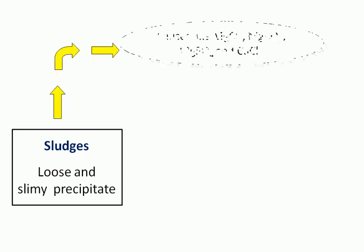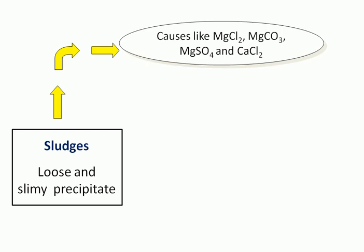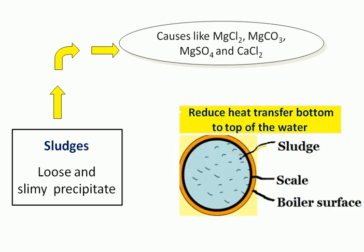Next, sludge. What is sludge? Sludge is a loosely precipitated deposit at the inner walls of the boiler. The causes of sludge formation include magnesium chloride, calcium carbonate, magnesium sulphate, and calcium chloride — these are the main sources for sludge formation in the boiler. When sludge forms, it reduces heat transfer from the bottom to the top of the water, as the loosely precipitated salt settles at the bottom of the boiler due to gravity.